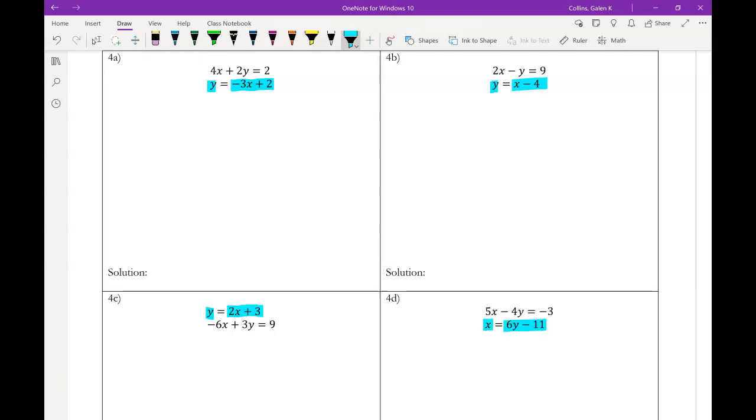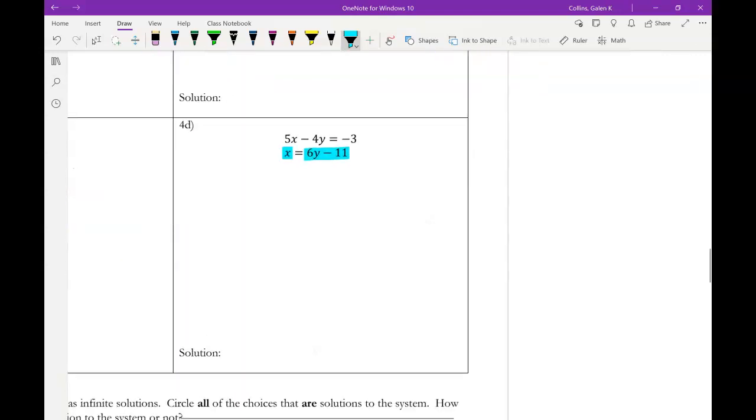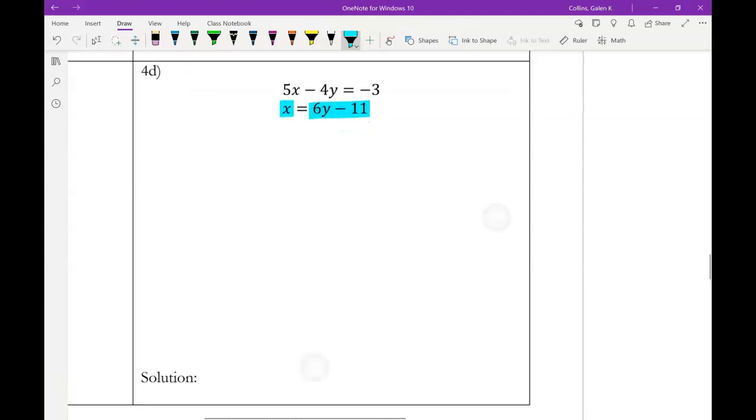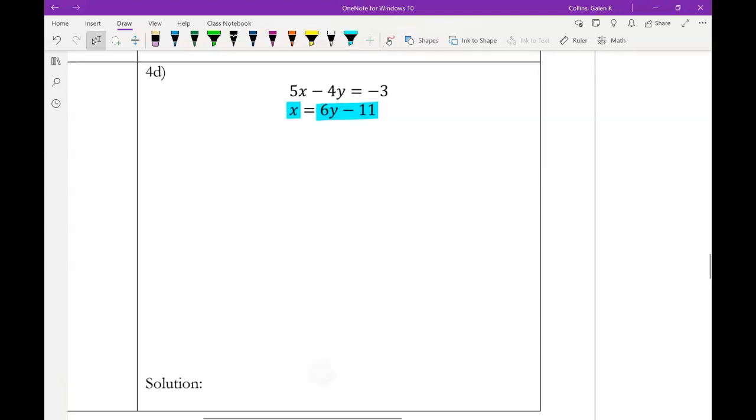So typically, we use substitution often when we have something like this, where in 4d, for example, look at that one, we can substitute 6y minus 11 in place of x. So let's try that one.